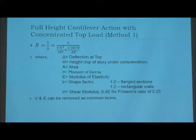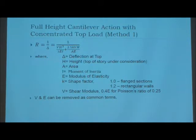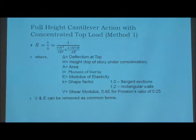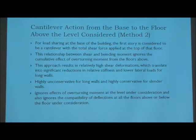If you want to compare it to steel, steel's Poisson's ratio usually varies from about 0.3 to 0.5, so 0.25 is a little bit less than that. The other thing is that the shear modulus and the modulus of elasticity can be taken out because they are common terms. So that's how you calculate Method 1 — it looks pretty simple.